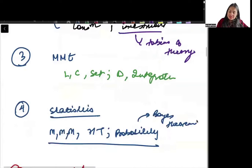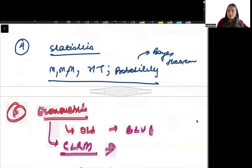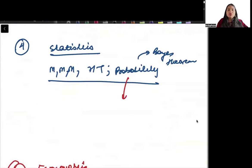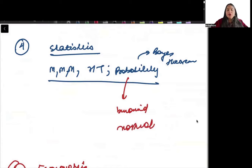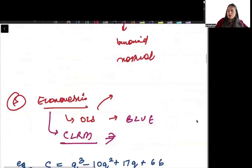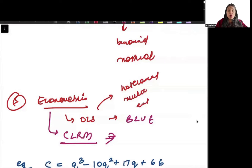As for statistics, different probability distributions can be asked — binomial and normal distributions. In OLS/econometrics, you can be asked what happens when there is heteroscedasticity, multicollinearity, or autocorrelation in the model. These are important topics for the exam.